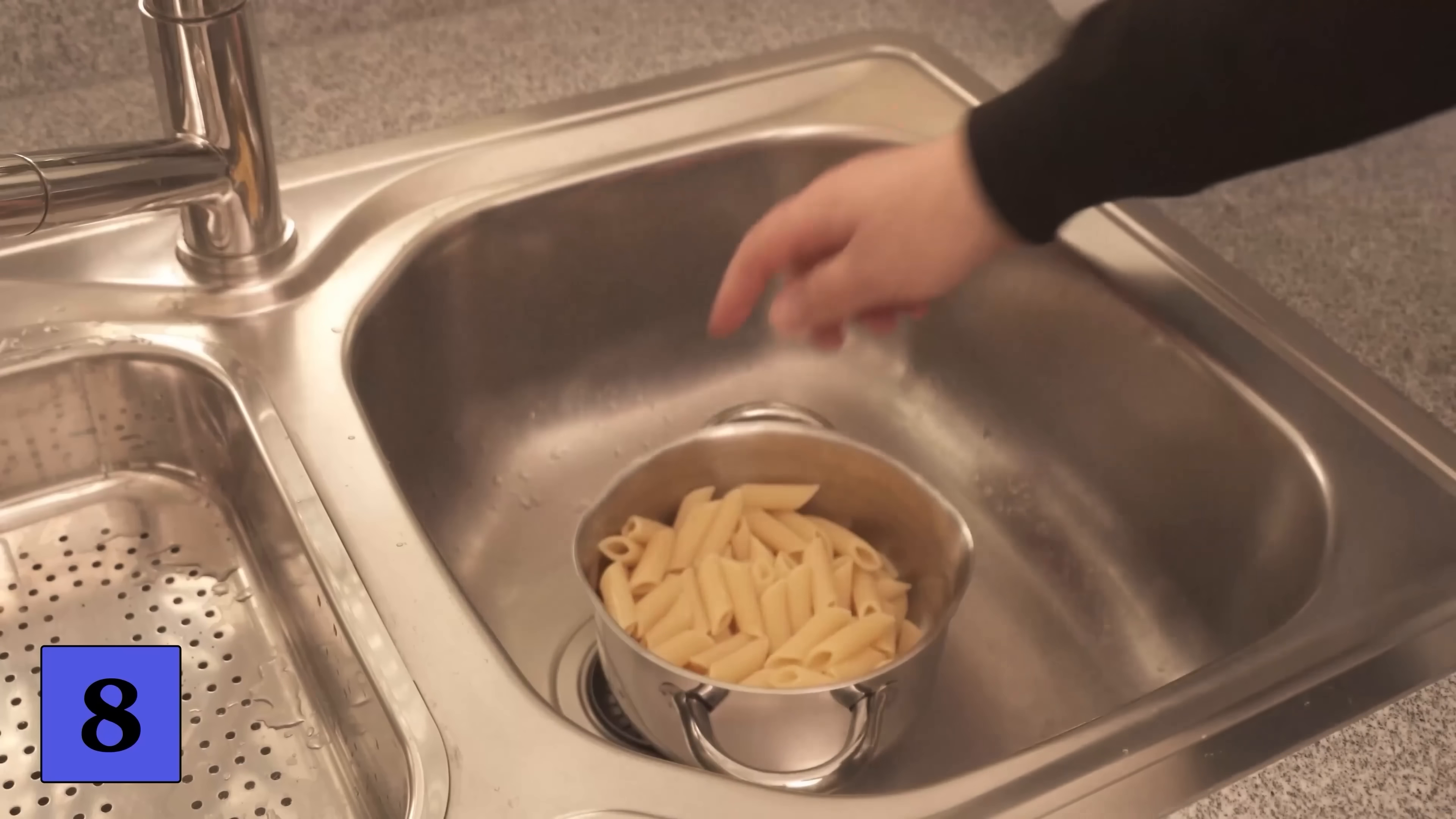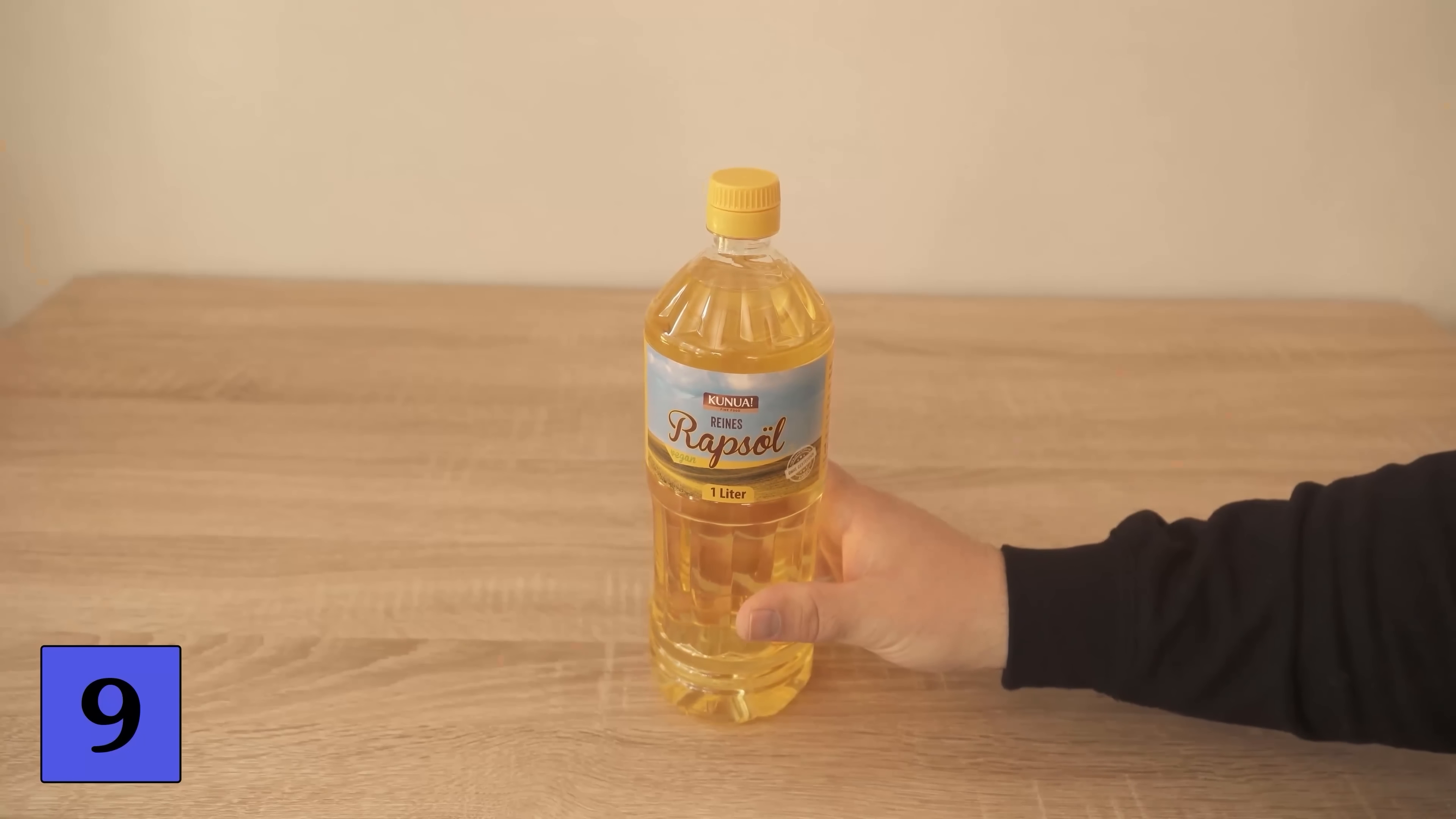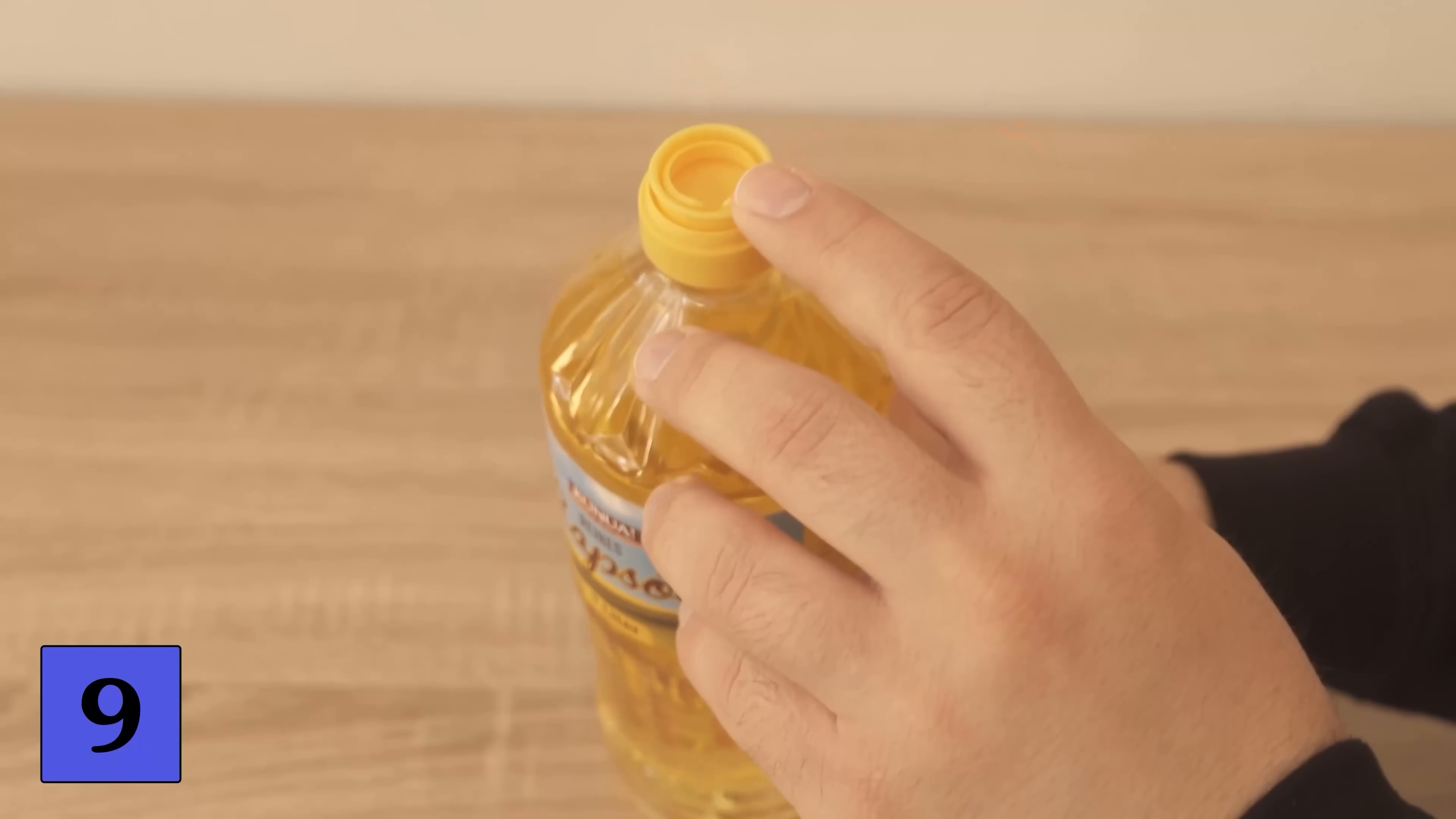And last but not least you should never throw away this part of oil bottles in the future. Because you can also use it for a little ingenious trick. If you have an oil bottle with a lid like this and this cap underneath you can now pull it out. But instead of throwing it in the rubbish here is what you should do with it.